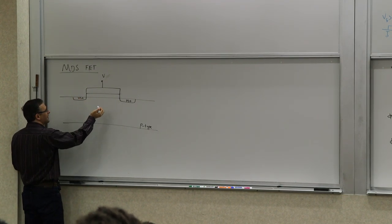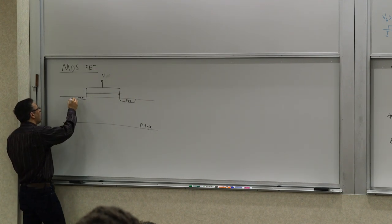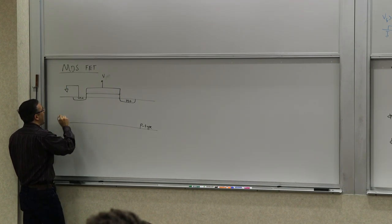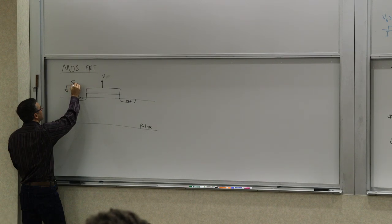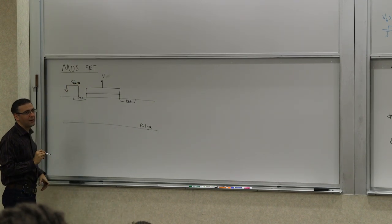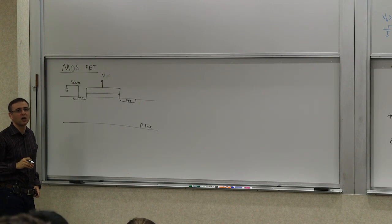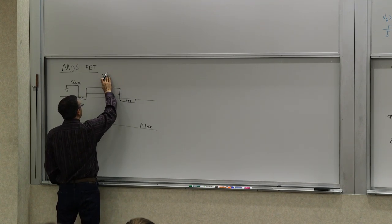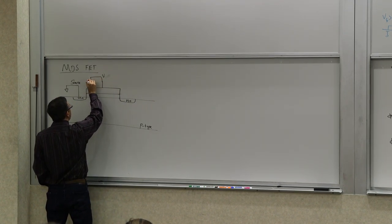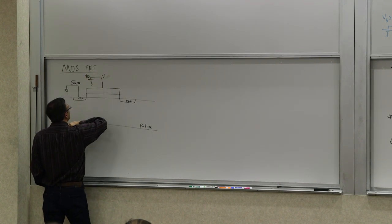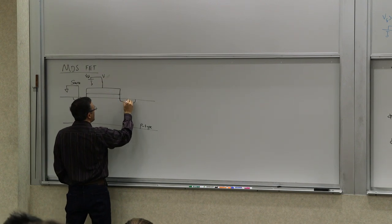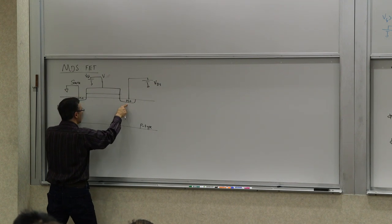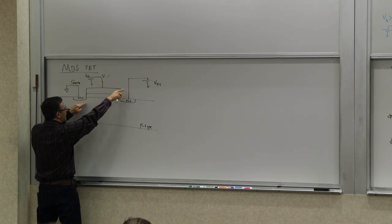This is a symmetrical device as drawn, so we can define one side as a reference potential — we define it as ground and call it the source. It's called the source because it's the source of charge in the channel. Now you apply a potential to the gate, VGS. Everything is referenced to the source, since that's the ground. And then you have another electric potential, VDS, the voltage between the drain and source terminals.